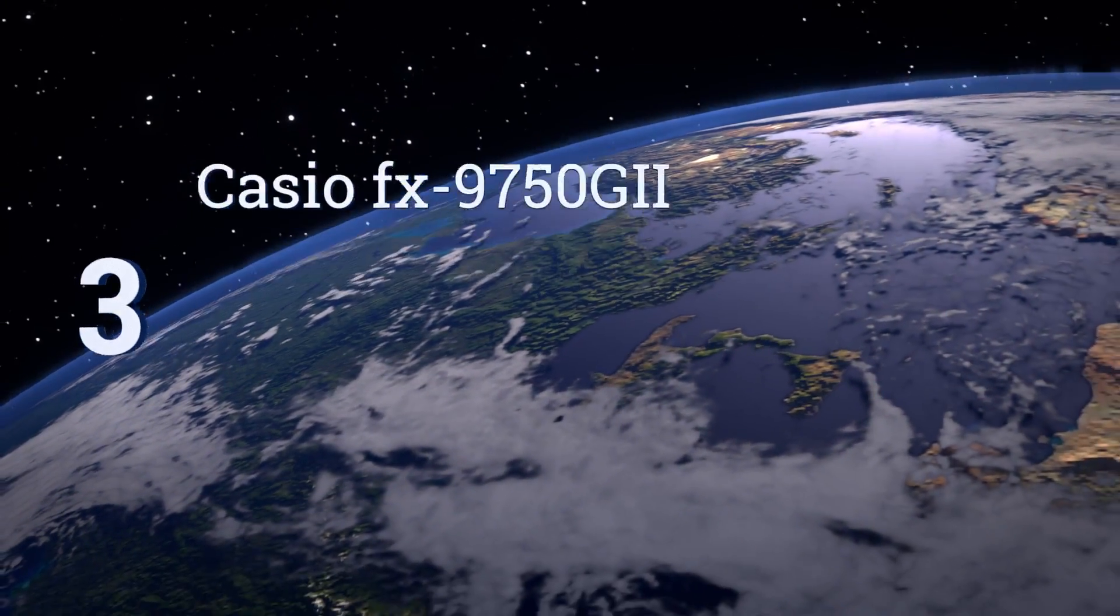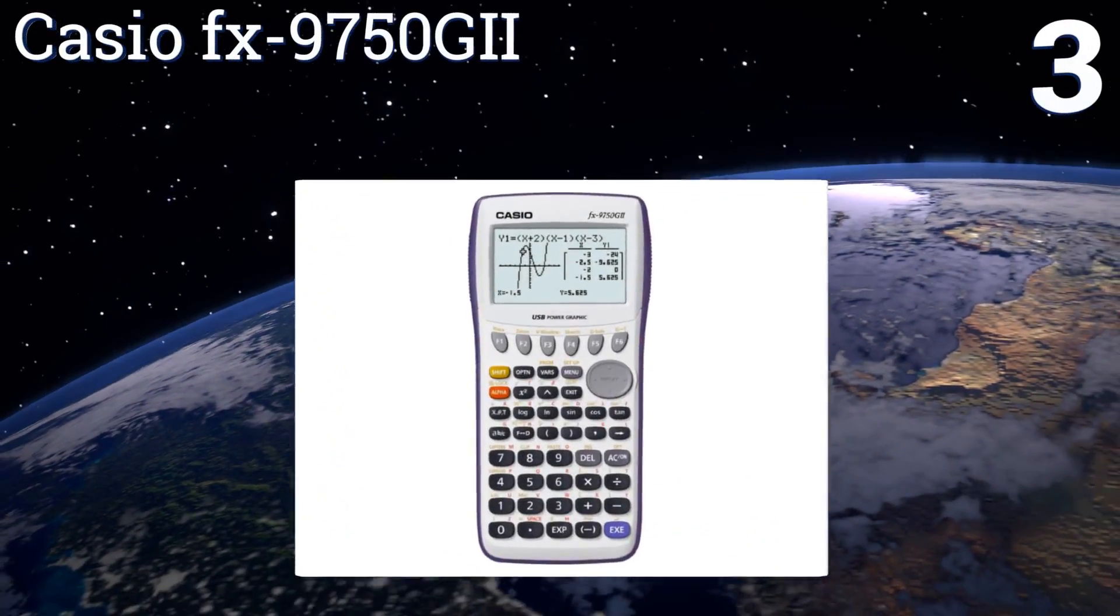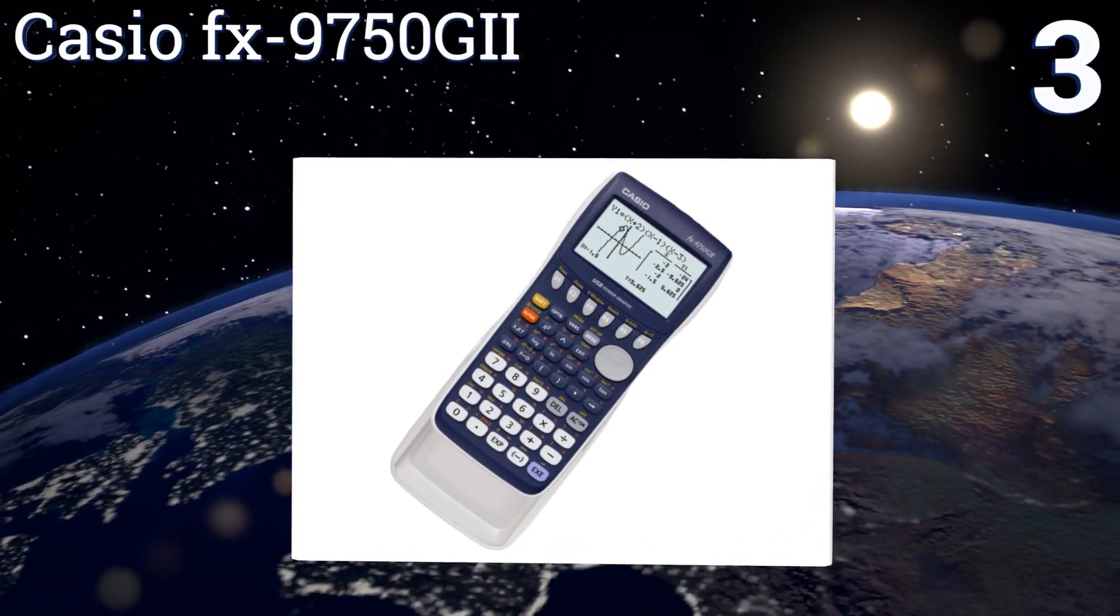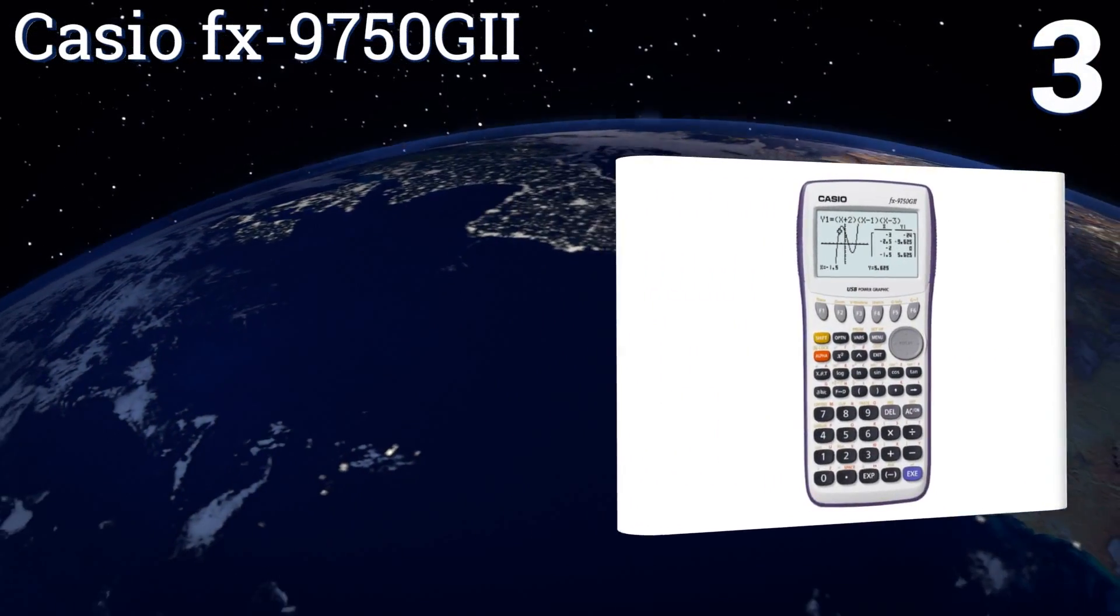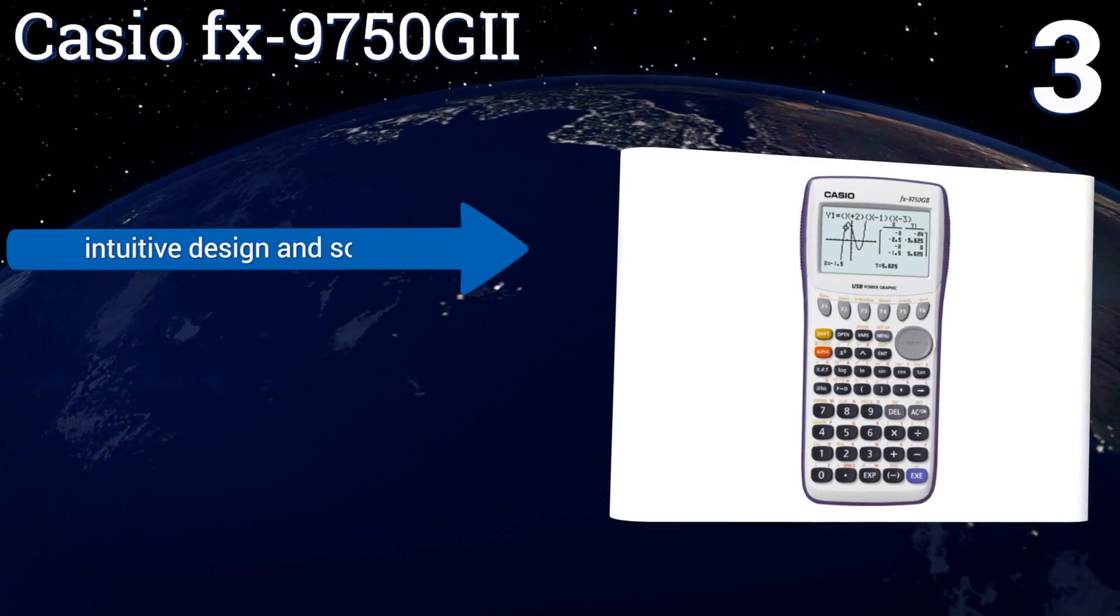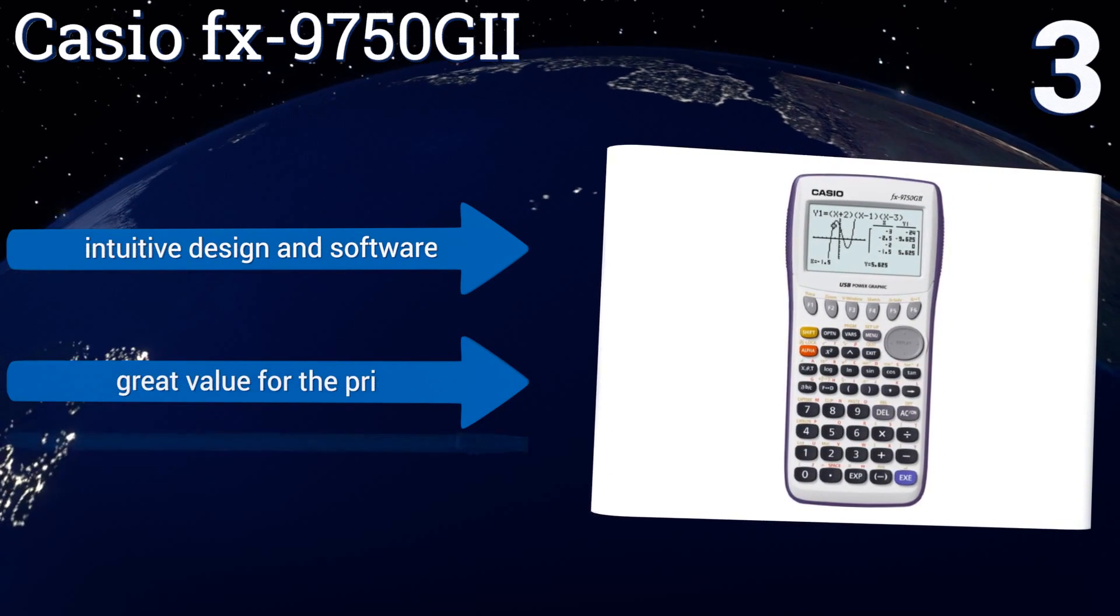Nearing the top of our list at number 3, the Casio FX9750G2 boasts an icon-driven on-screen menu system for easy access to advanced functions, and has a hard slide-on cover for maximum protection when not in use.